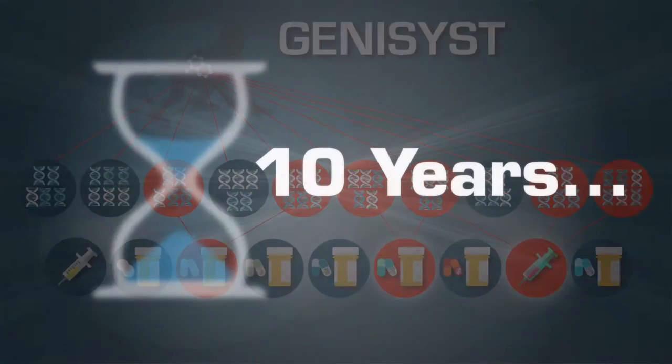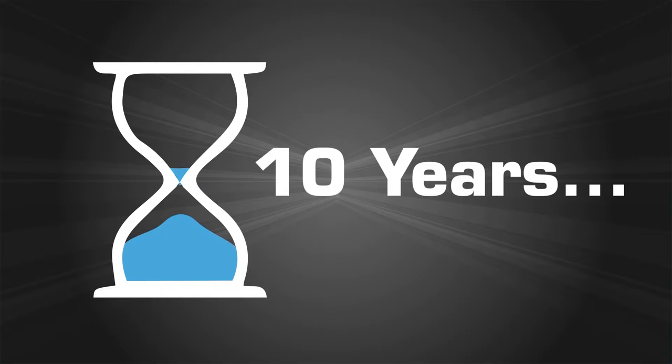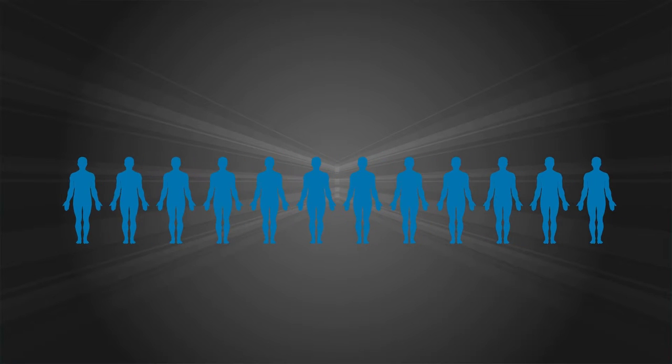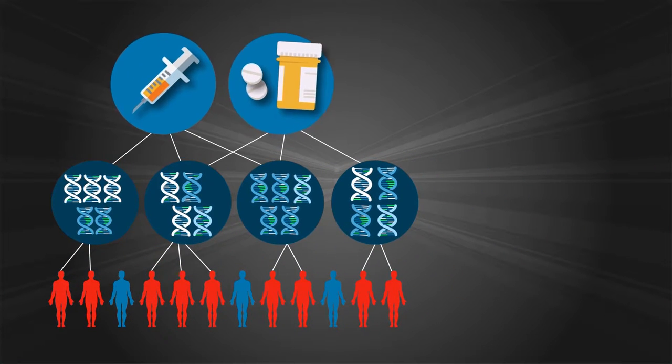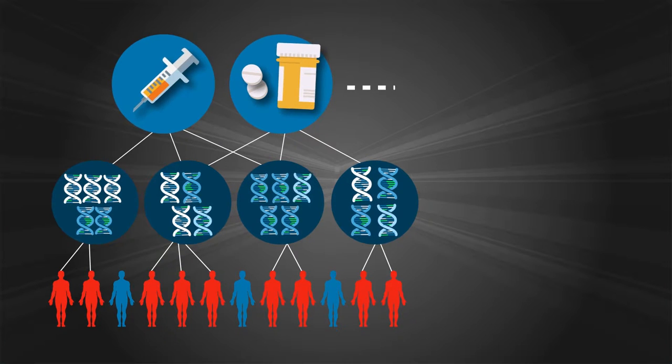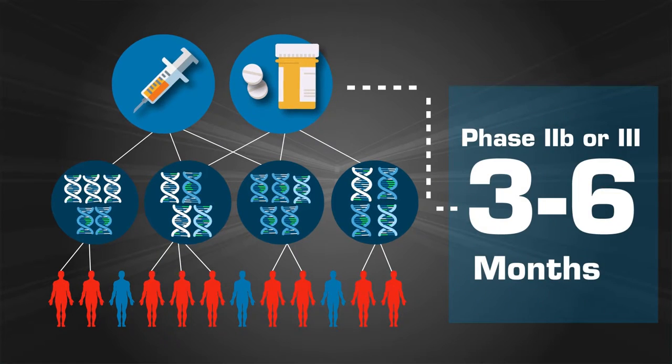Suddenly, instead of waiting 10 years for the next promising leukemia drug, we can identify already-approved therapies that may be effective in patients and bring them to the clinic in Phase 2 or Phase 3 trials within 3 to 6 months.